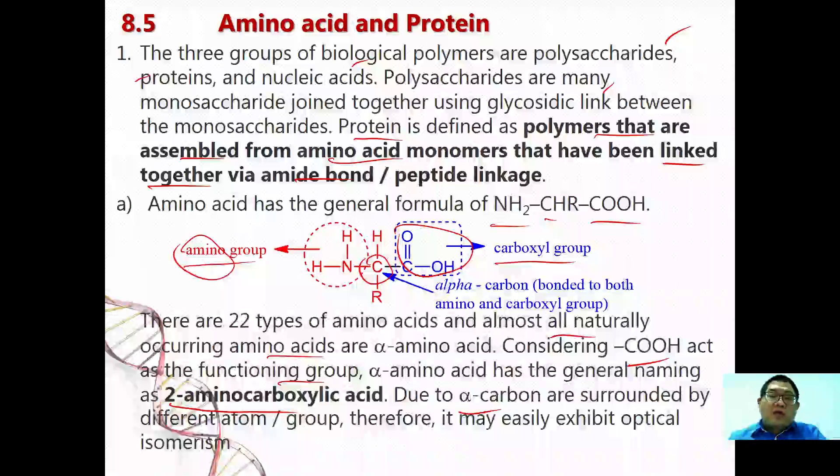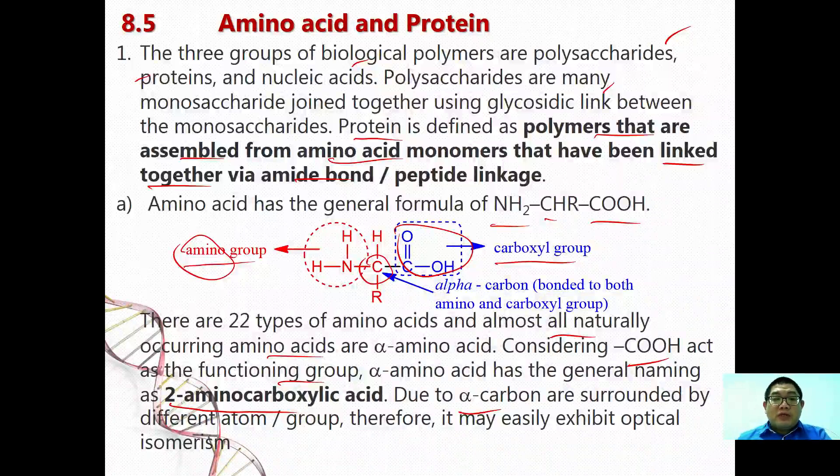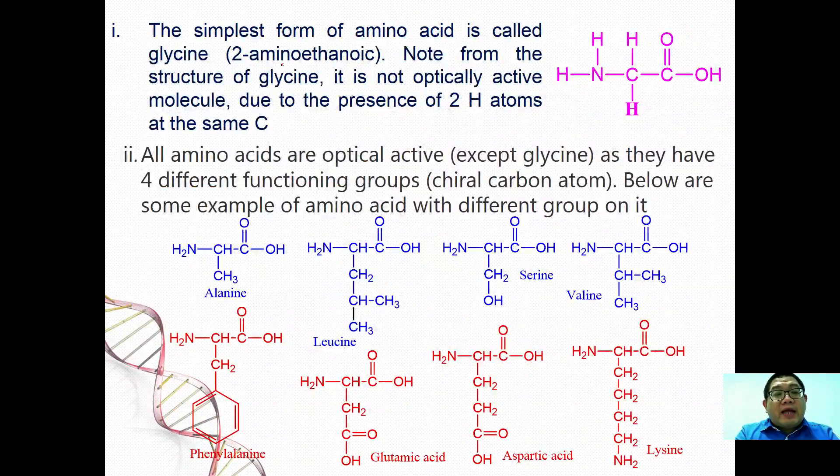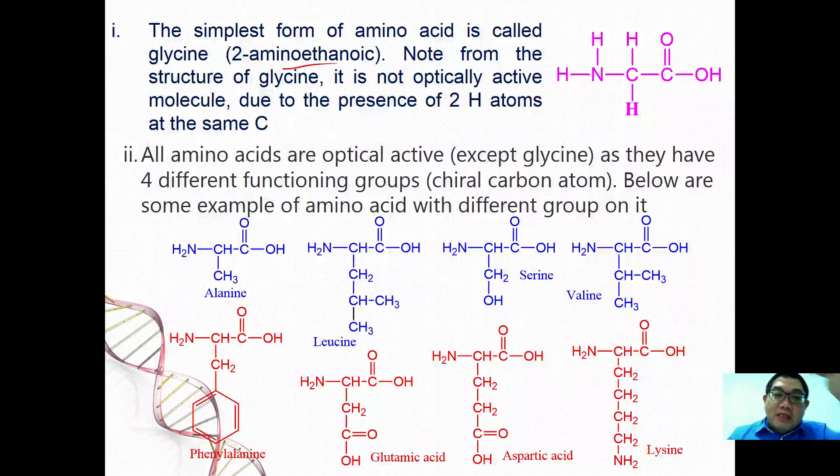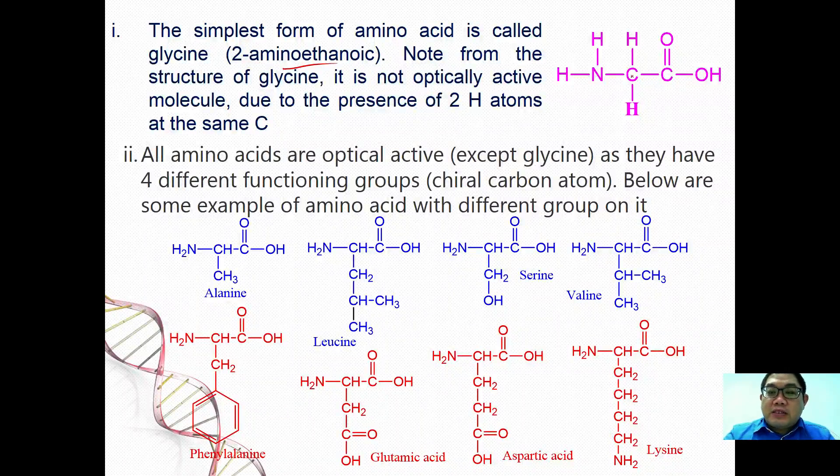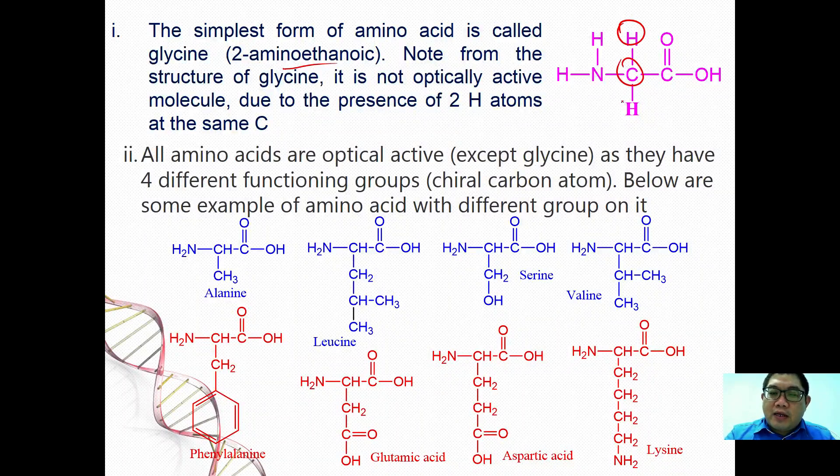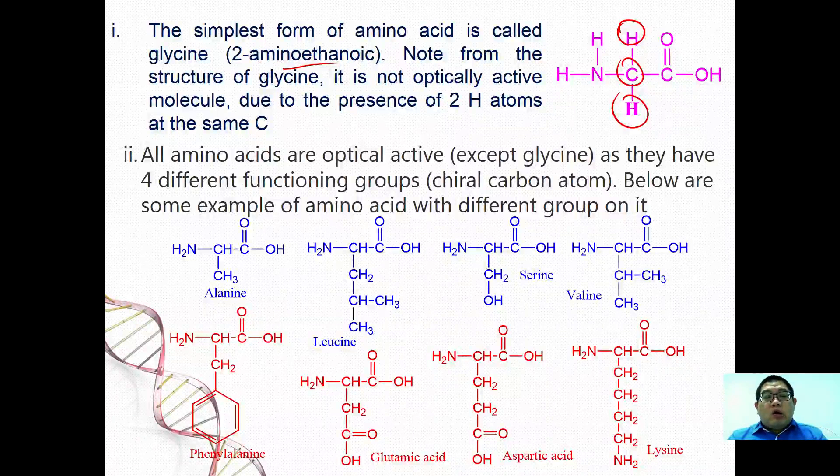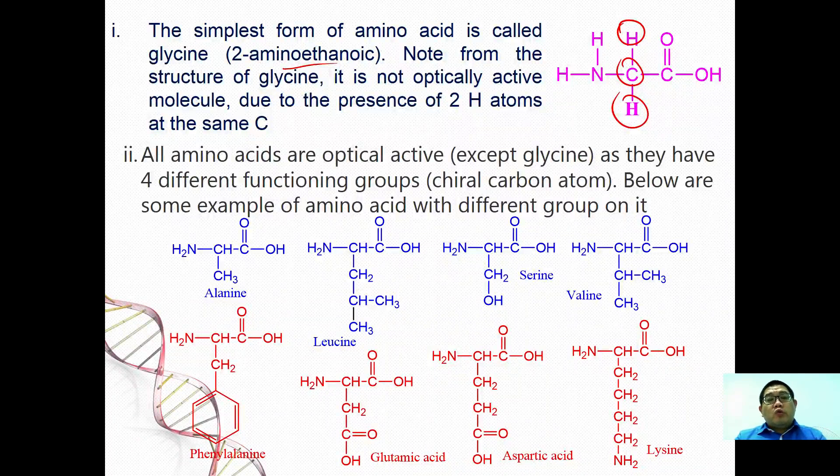So the simplest amino acid is called as glycine, or IUPAC name is 2-aminoethanoic acid. Note from the structure of glycine it is not optically active because this carbon is surrounded by two hydrogen atoms. Other than this glycine, all amino acids are actually optically active.